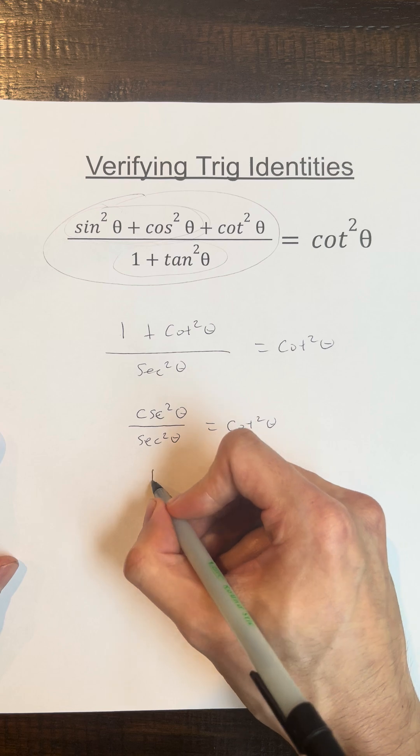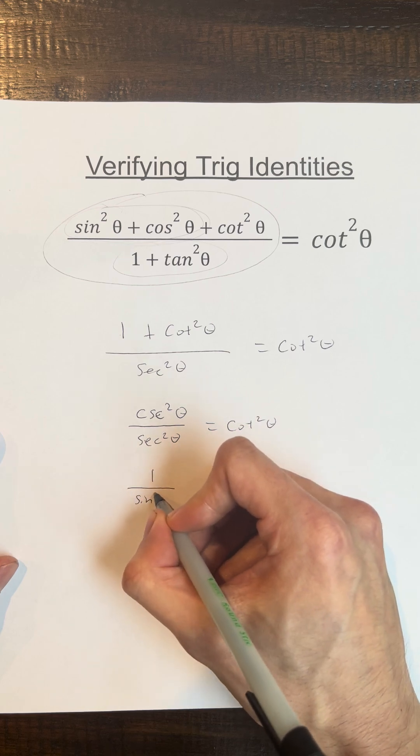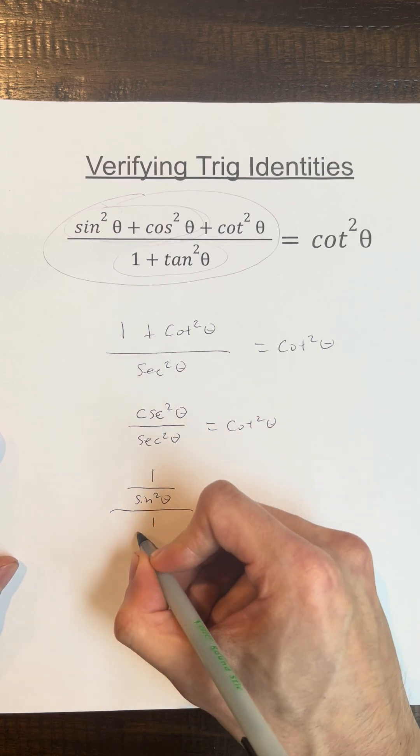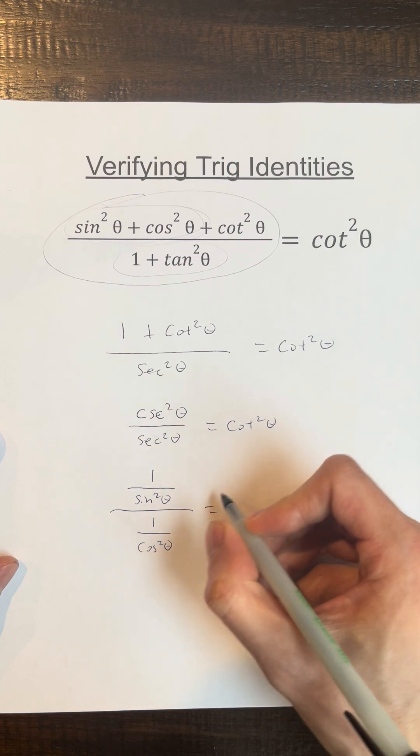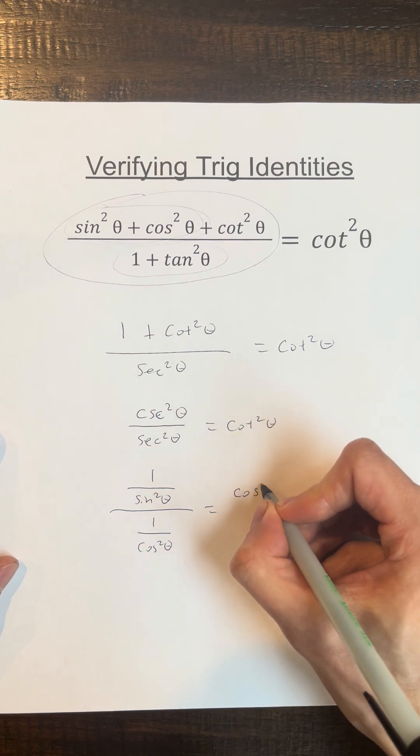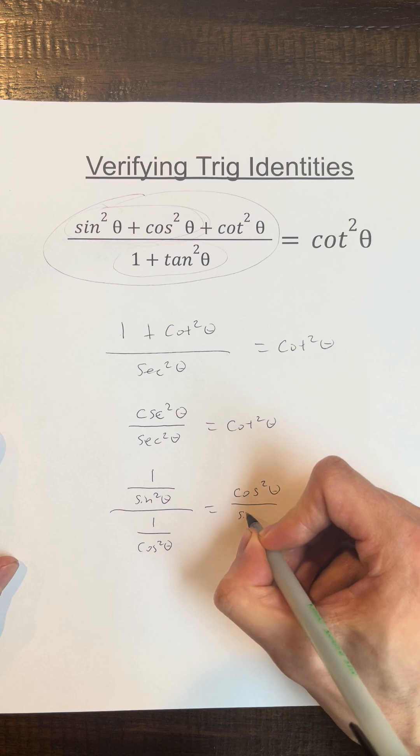So cosecant is the same thing as 1 over sine. Secant is the same as 1 over cosine. Cotangent is cosine over sine.